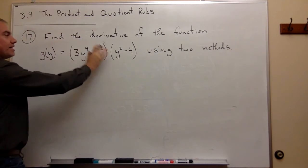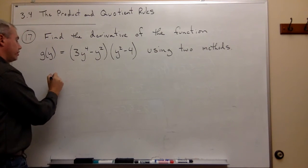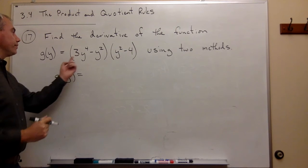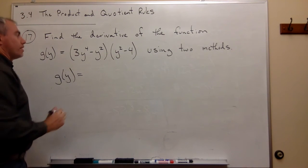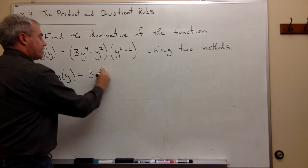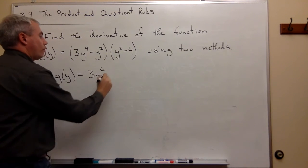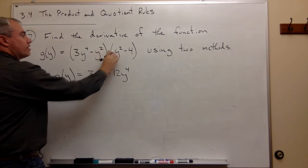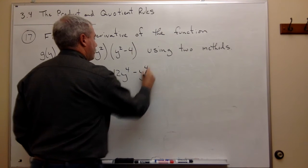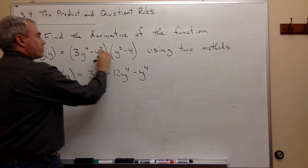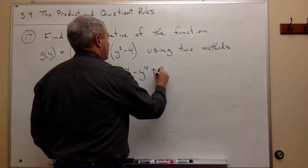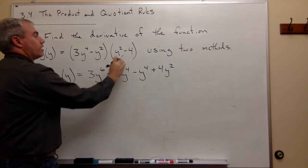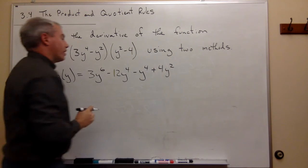And now let's start out by, instead of taking the derivative using the product rule, I'm going to foil this out first. So I get g(y) is equal to 3y^4 times y^2 is 3y^6. 3y^4 times -4 is -12y^4. -y^2 times y^2 is -y^4, and then I get -y^2 times -4, which is positive 4y^2. Yeah, -y^2 times -4 is positive 4y^2.